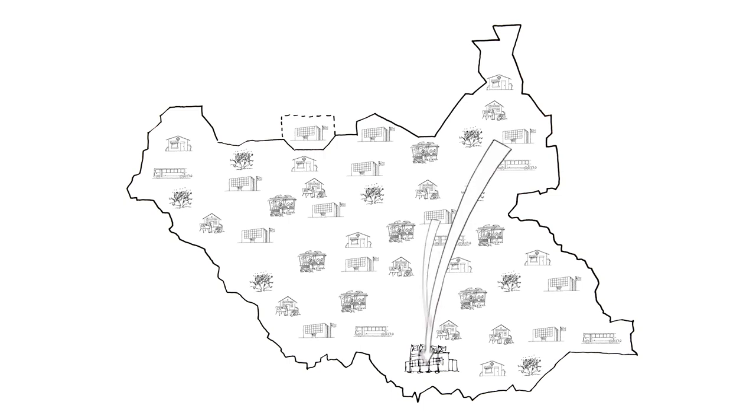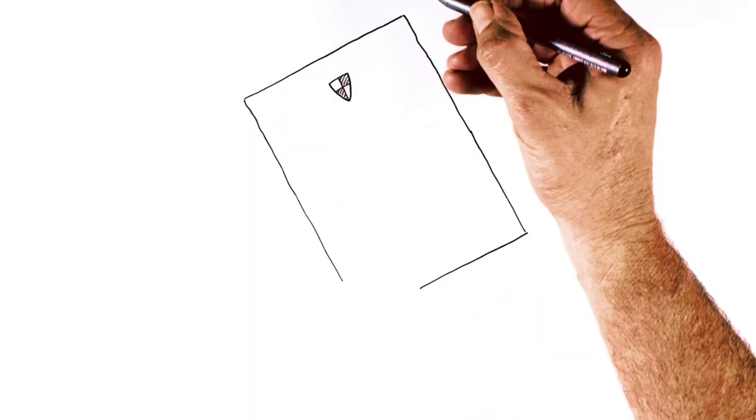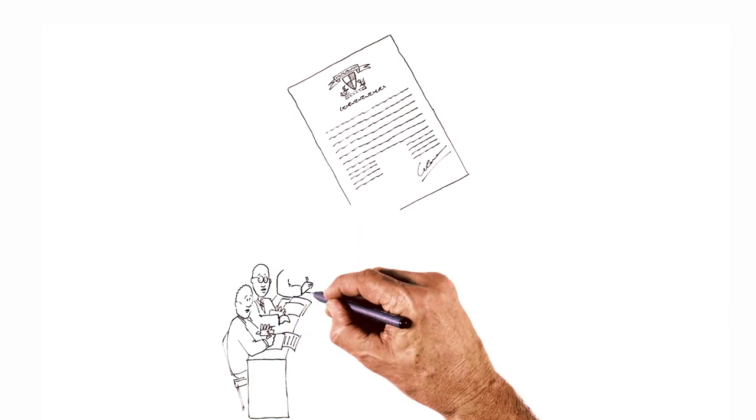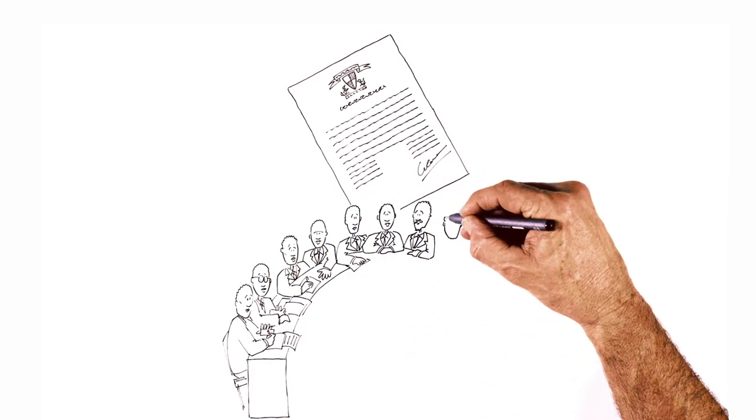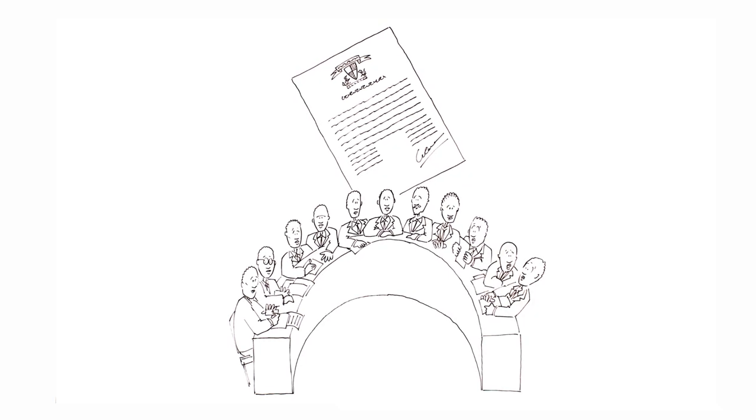Also, the states themselves send representatives to participate in national decision making. This sharing of powers between the central government and individual states is protected by a written constitution. The federal elements of the constitution can't be changed without consent from the states.